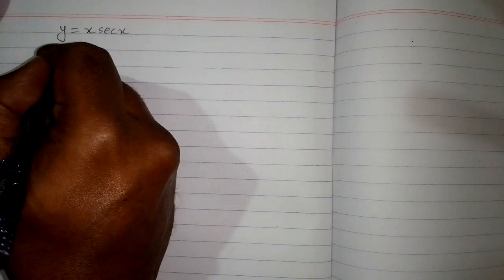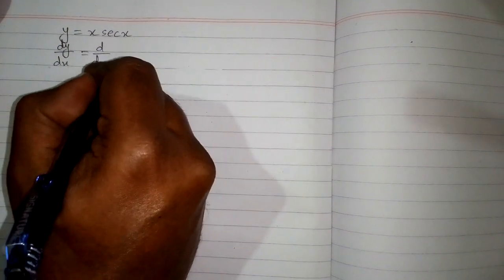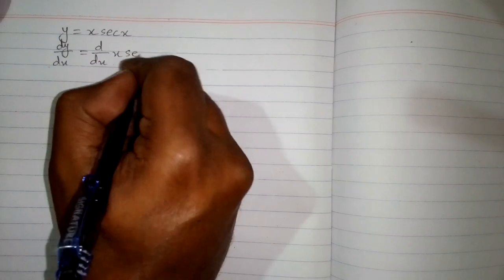In this video we will find the derivative of the function y equals x times sec x. First, we will differentiate both sides with respect to x. That is dy/dx equals d/dx of x times sec x.